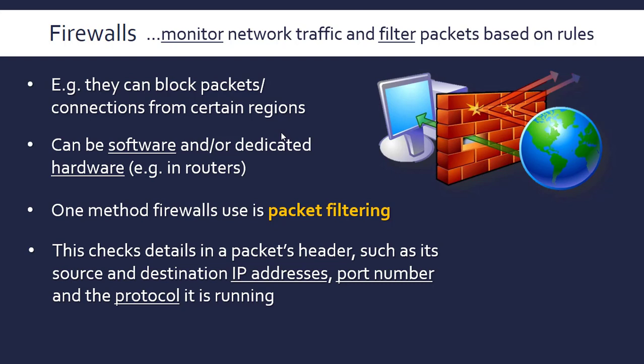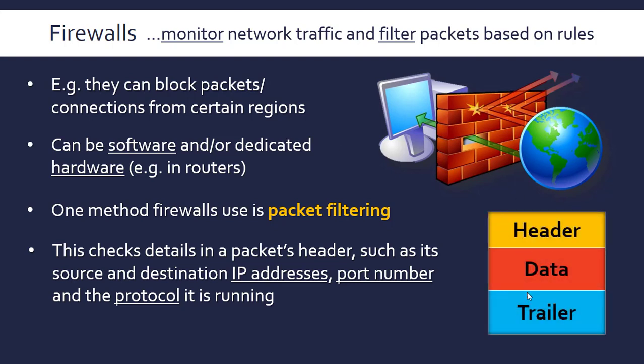Data is split up into little packets sent alongside a header — you can ignore the trailer. The header contains information like the IP address of the source and destination, the port number (the software endpoint), and the protocol the packet is being transported with. The firewall looks at the header and based on any of these fields, either accepts or rejects the packet. For example, if the IP address is from a hostile country it can be rejected, or if it's running an unexpected protocol or going to an unexpected port number. It's essentially about metadata rather than the data itself.